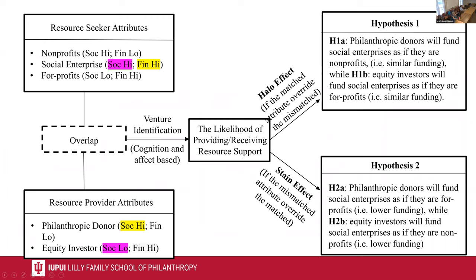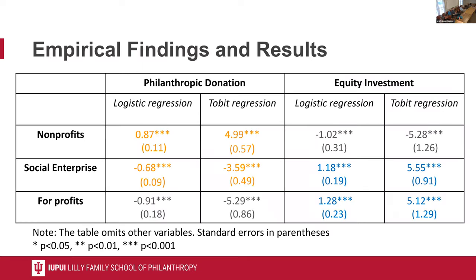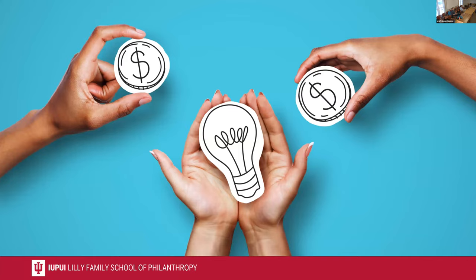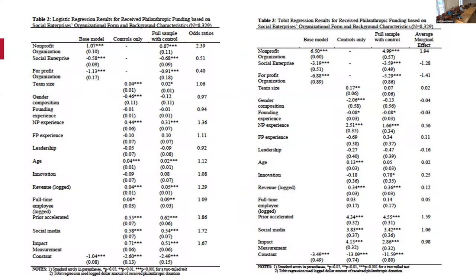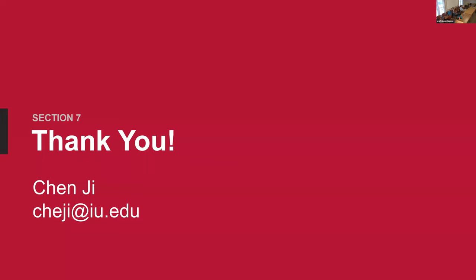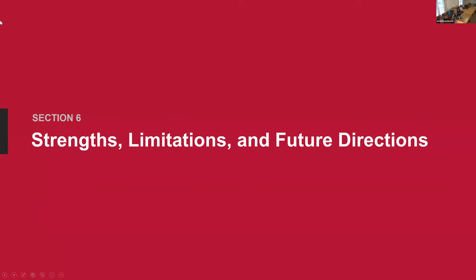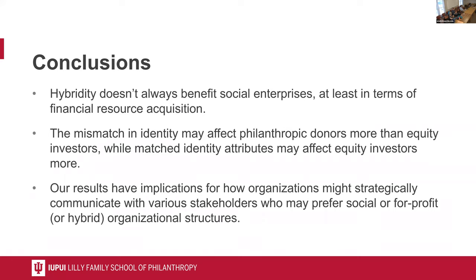Or are these results saying they're doing worse than the other two alternatives? Basically, our halo effect echoes the point that because there is a halo effect, they can get access to resources from both philanthropic donors and equity investors, which provides an additive impact on social enterprises' financial resource acquisition. We also have ratios and average marginal effects when we do the logistic regression and tobit regressions, but we somewhat simplified how we present the findings.